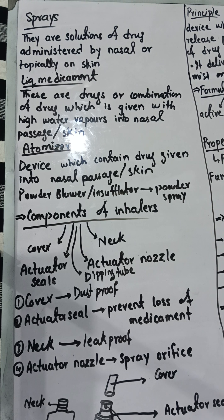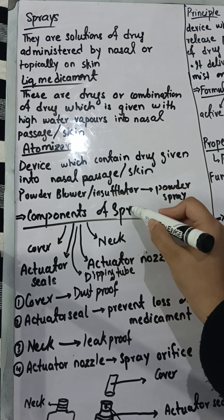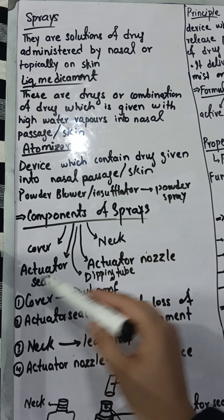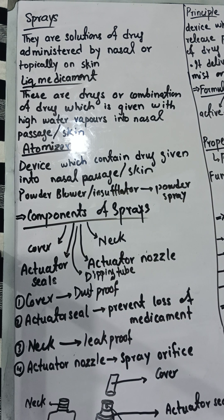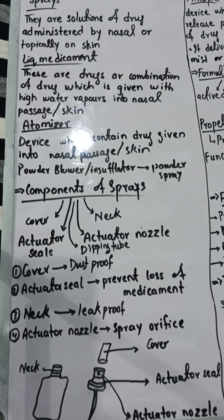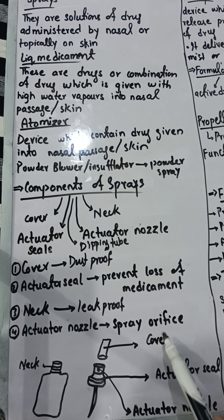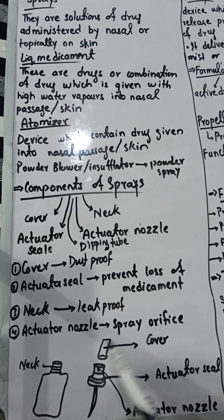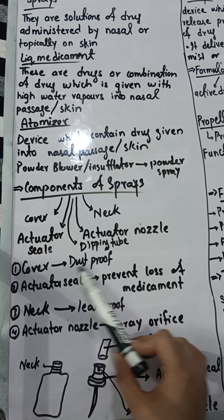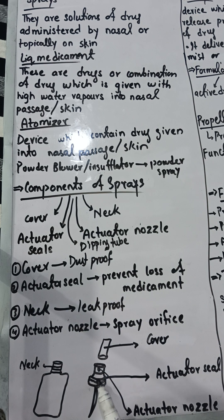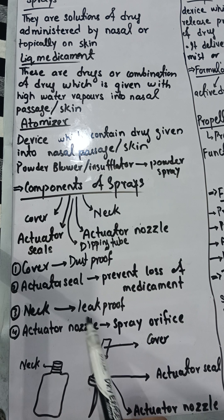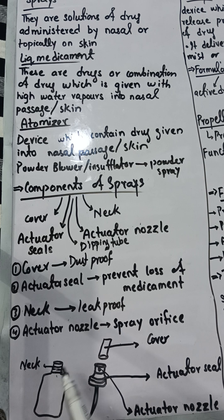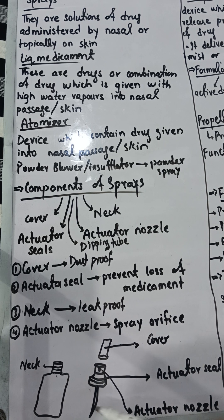Let's discuss the components of sprays. The components are: cover, neck, equator seal, equator nozzle, and a dip tube. The cover makes it dust proof. The equator seal prevents the loss of the medicament. The neck provides a leak proof seal. The equator nozzle produces a spray orifice from which the spray comes out. And this is the dipping tube.